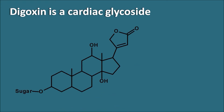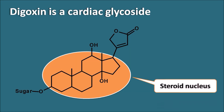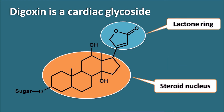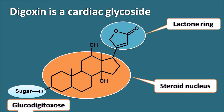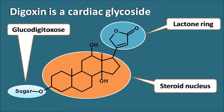Chemically, Digoxin has a structure containing a steroidal nucleus. This steroidal nucleus is connected to a five-membered unsaturated lactone ring. As it is a glycoside, it is also attached with a sugar moiety, made up of glucodigitoxose units. In this way, Digoxin is a steroidal cardiac glycoside acting as a cardiotonic.